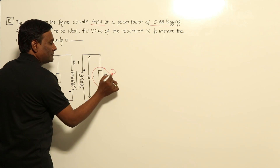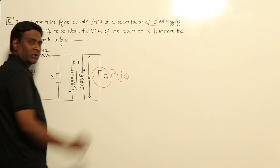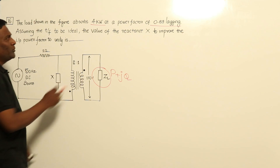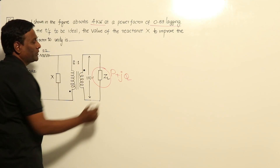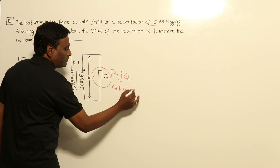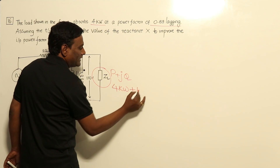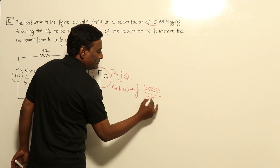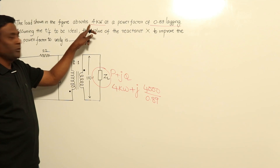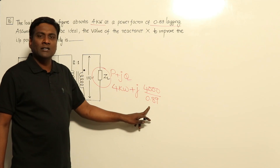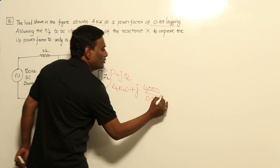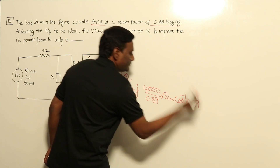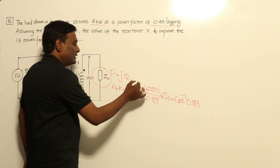If it is absorbing some power and some reactive power, who has to supply that reactive power? This particular source only has to supply. Now how much is the active and reactive power component? The reactive power component is going to be 4 kW plus j times (4000/0.89), because V·I·cosφ = 4 kW, so dividing by cosφ gives V·I, and multiplied by sin(cos⁻¹(0.89)) gives the reactive power.